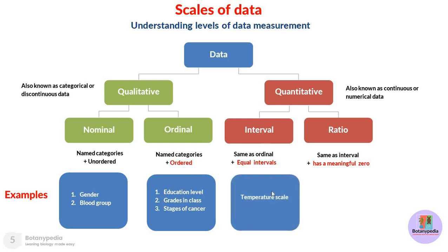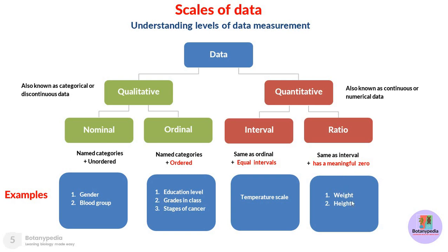For the interval scale there is an example of a temperature scale. For the ratio scale, examples include the weight of individuals or the height of individuals, which fall into the ratio kind of data. Broadly, both of these are quantitative data.